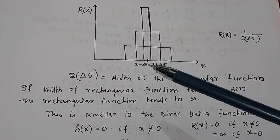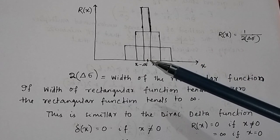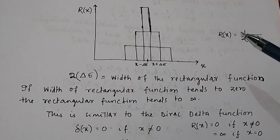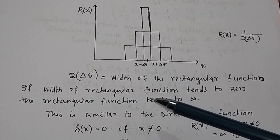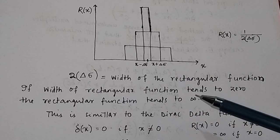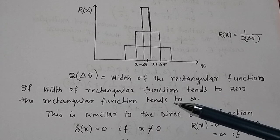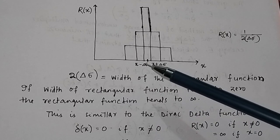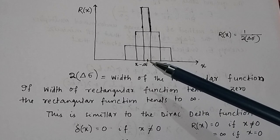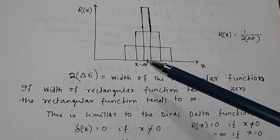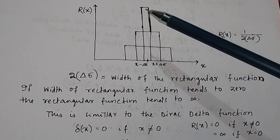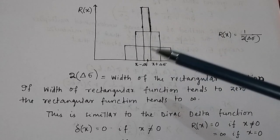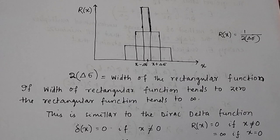That means if you take the width of the rectangle as a, the height is taken as 1/a. If the width of the rectangular function tends to 0, then the rectangular function tends to infinity — the height of the rectangle becomes infinite.